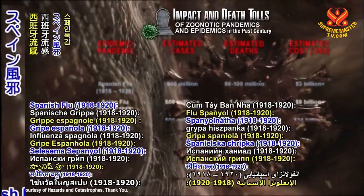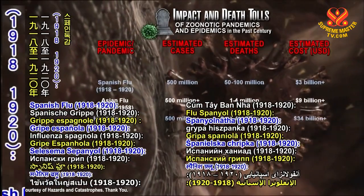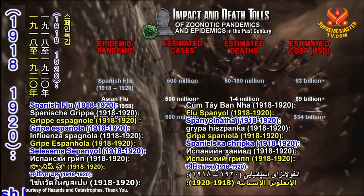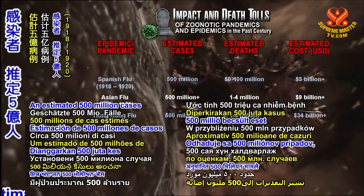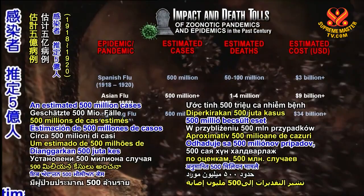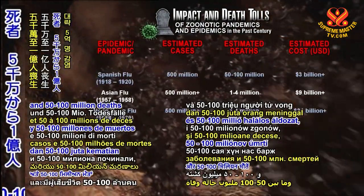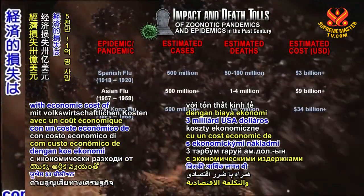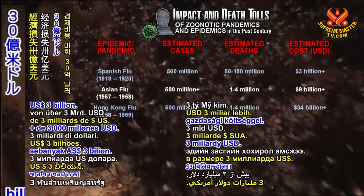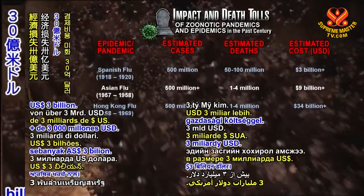Spanish flu, 1918–1920: an estimated 500 million cases and 50 to 100 million deaths, with an economic cost of at least 3 billion U.S. dollars.